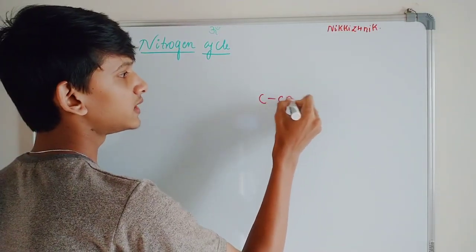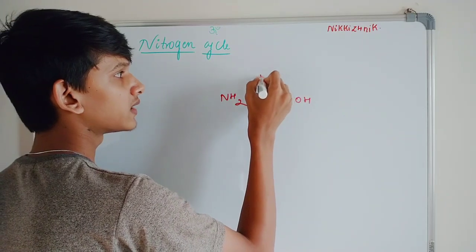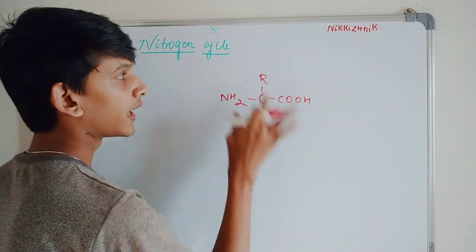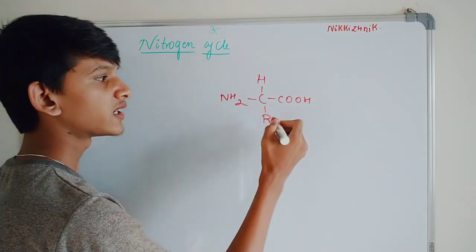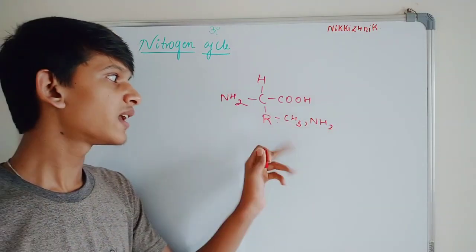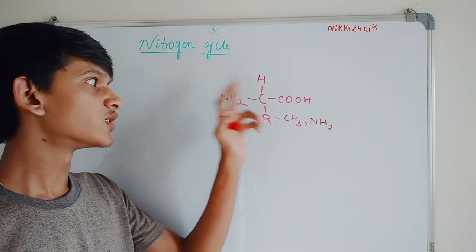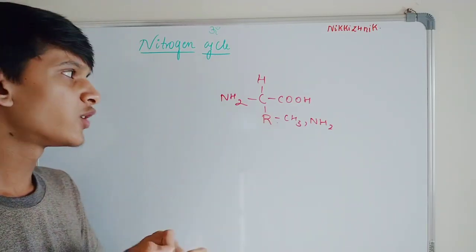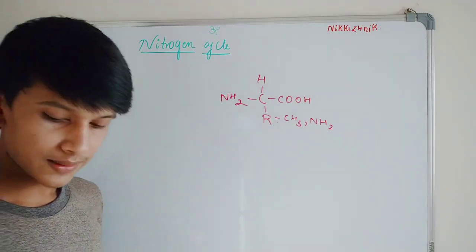Nitrogen is also very important for proteins. In amino acid structure, there is a C-COOH group, an amine group (NH2), and an R group. The R group can vary — it can be CH3, NH2, or anything else. In the basic amino acid formula, we can see Nitrogen is present. So Nitrogen is everywhere and is greatly needed by us.